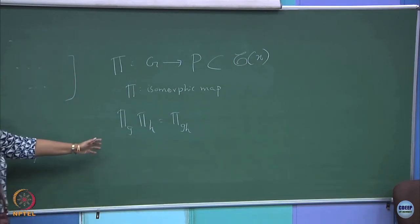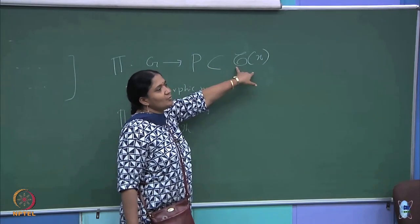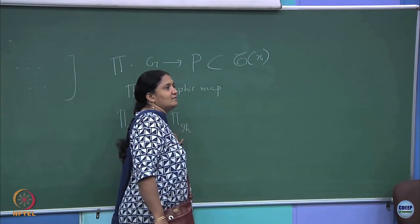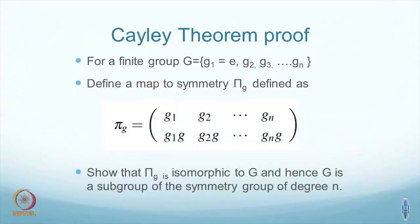Once I show this, the subset of permutations in the symmetric group of degree n will have all the group properties and will be isomorphic to your finite group of order n. That is Cayley's theorem, and this was given in one of your assignments to check. I have said: show that pi_G is isomorphic to G and hence G is a subgroup of the symmetric group of degree n. You can systematically write pi_h and then write the combinations and show that this property is satisfied; the inverse operation is well defined for permutation elements.